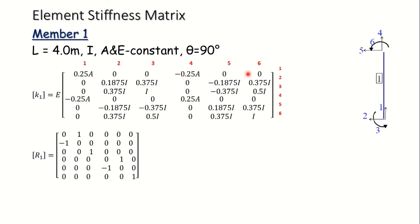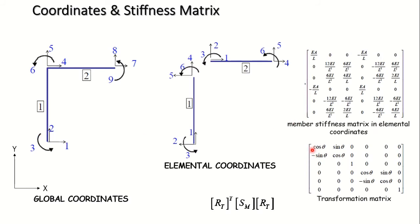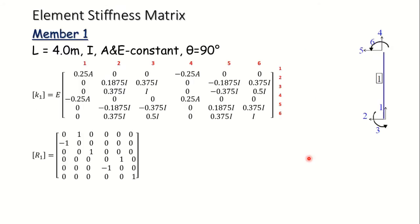This local stiffness matrix must be converted to global coordinates. For that we require the transformation matrix R1 for member 1. Since the inclination is 90 degrees, cos 90 = 0 and sin 90 = 1. The 3 by 3 sub-matrix uses entries cos theta, sin theta, 0; minus sin theta, cos theta, 0; 0, 0, 1. Once the inclination is known, this transformation matrix is easily expressed from trigonometric relations.